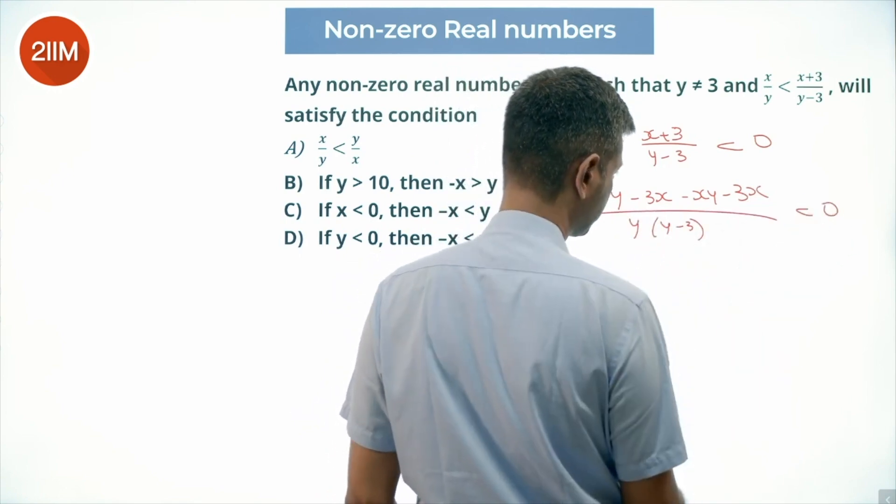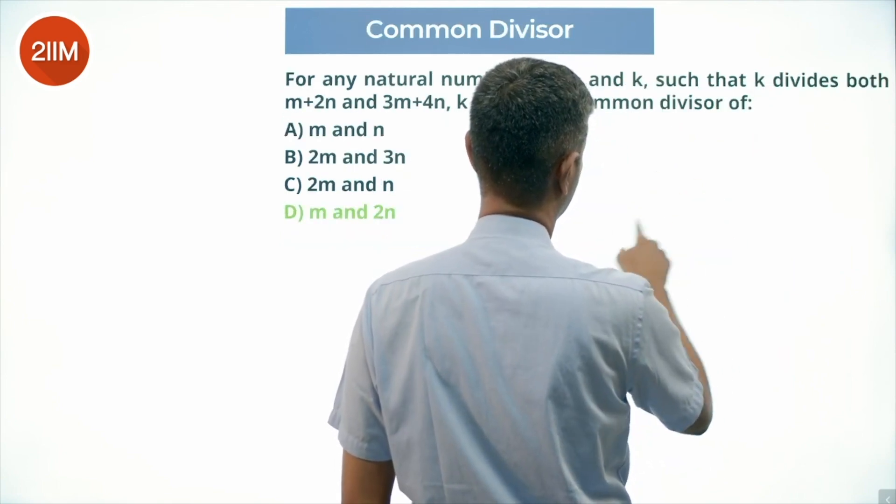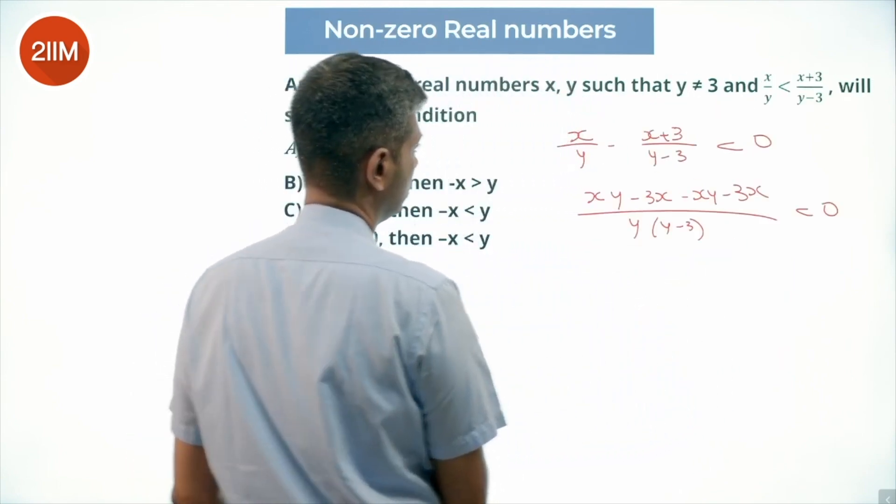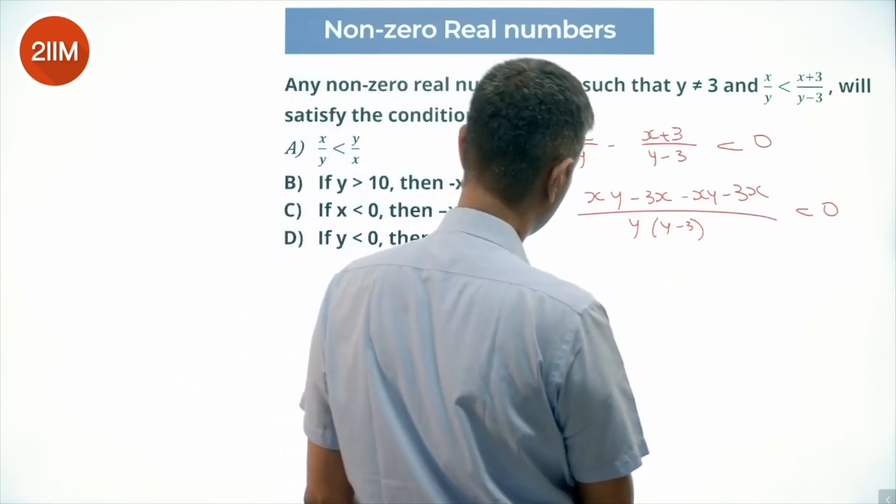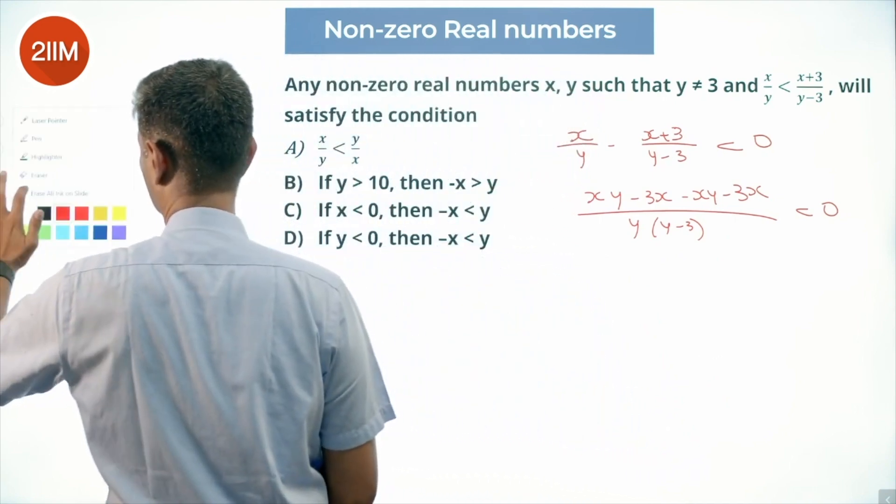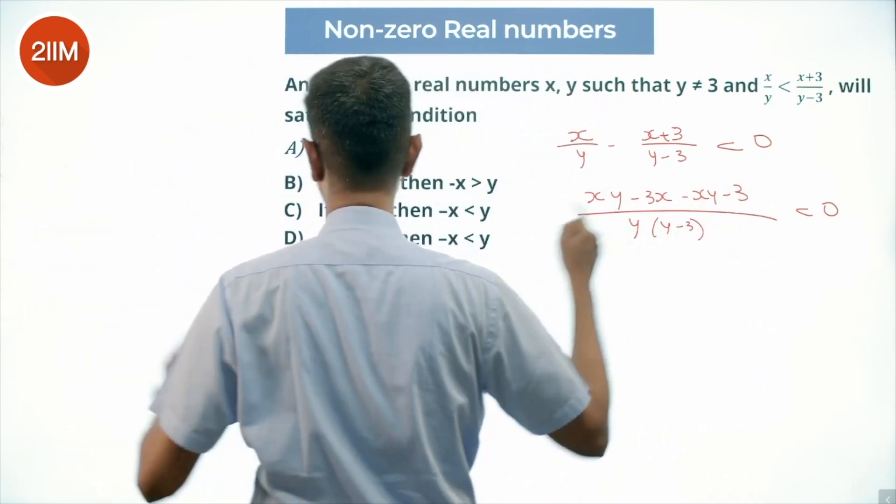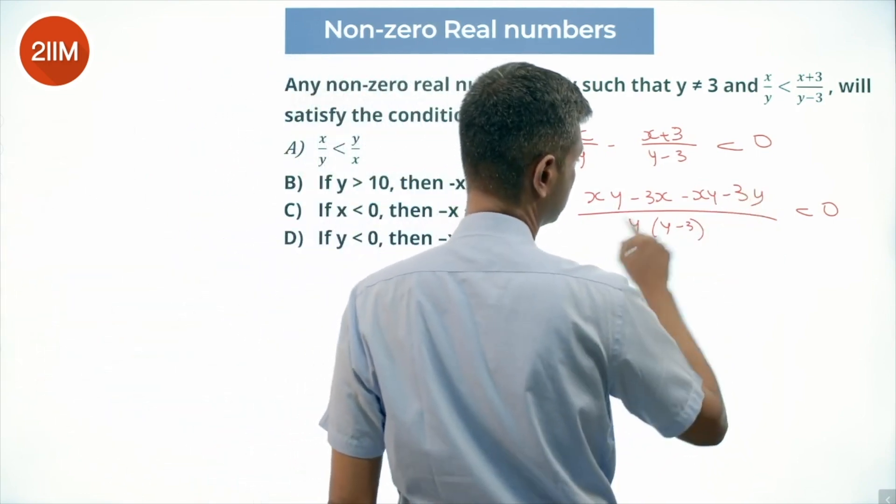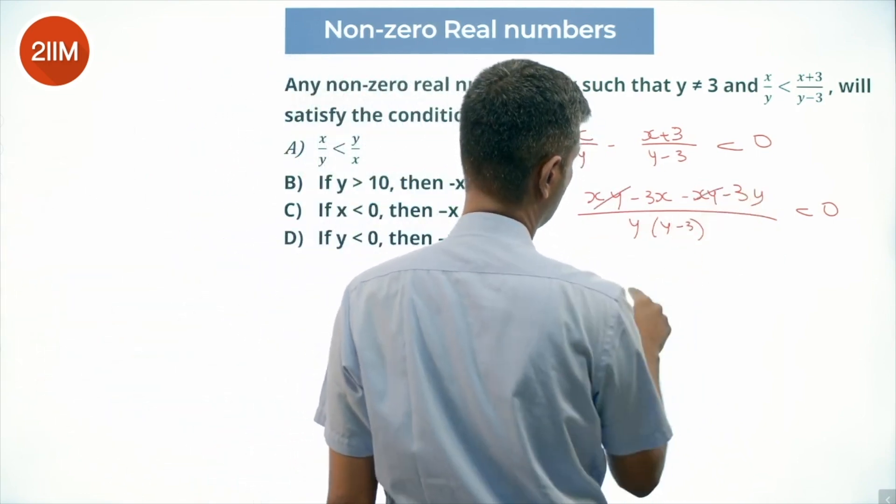xy - 3x - xy - 3y by y(y-3) less than 0. xy gets knocked off. I made a mistake here, I will fix that.